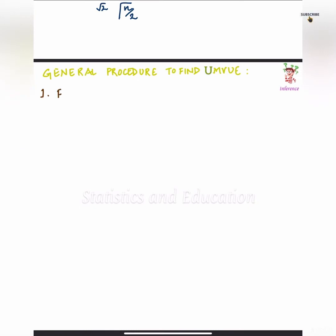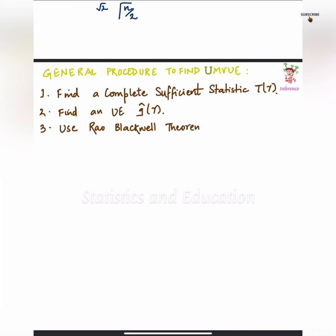To quickly revise, the general procedure to find UMVUE is: find a complete sufficient statistic T(X), and then find an unbiased estimator G hat of theta, and use Rao-Blackwellization to obtain a UMVUE.